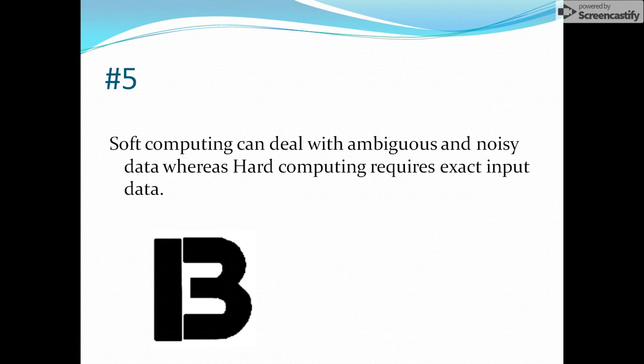The fifth one is soft computing can deal with ambiguous and noisy data. Again in this diagram, you have some ambiguity here. It could be read as 13 or it could be read as B. So there are two different options. Soft computing can deal with this kind of ambiguity. Whereas if we talk about hard computing, then it requires exact input data. If it is B, then it should be B. It could not be 13 in that case. But soft computing does have the capability of understanding or differentiating between two different options from one diagram.